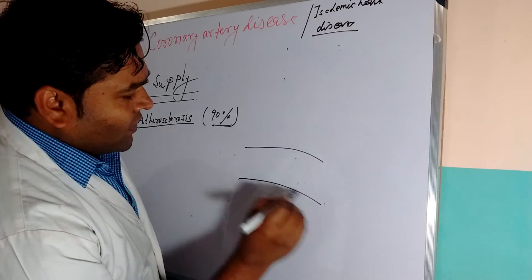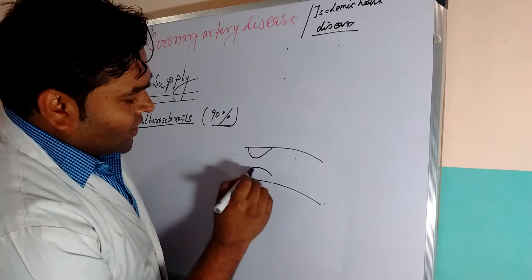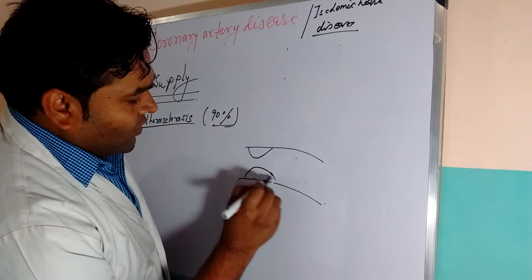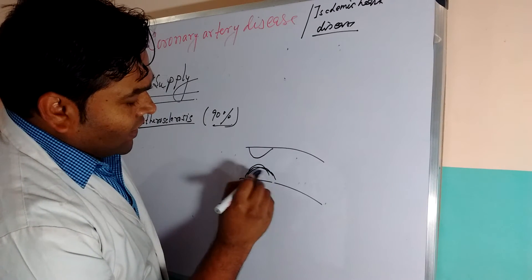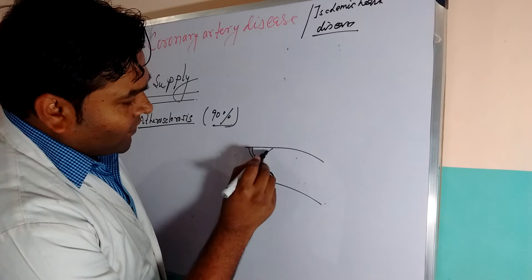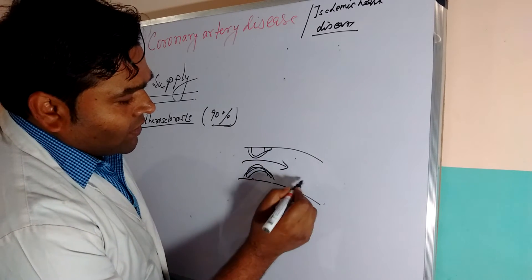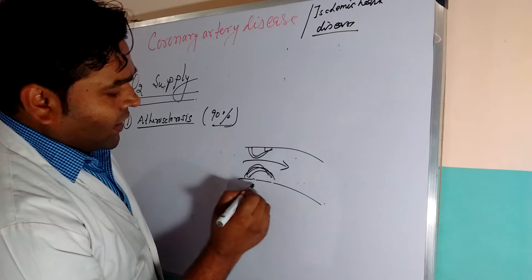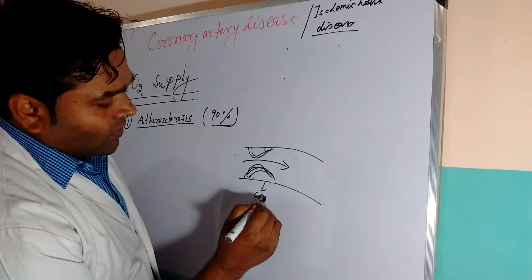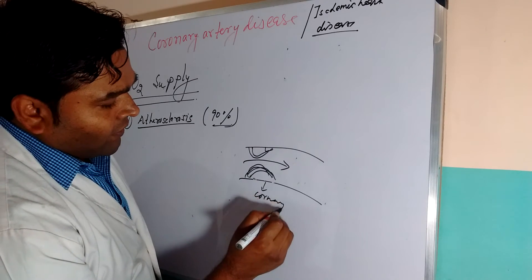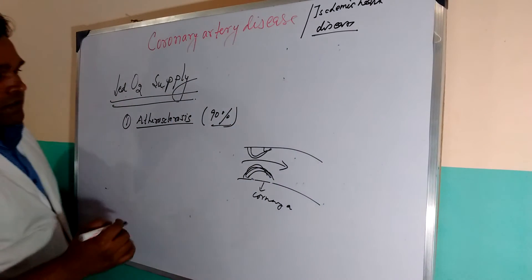When plaque is deposited in the coronary artery, it leads to reduced blood supply to the distal part of the coronary artery, leading to ischemic heart disease.